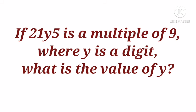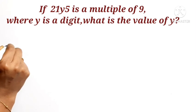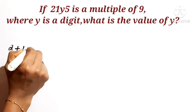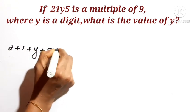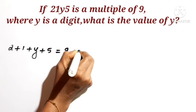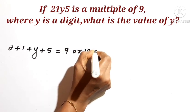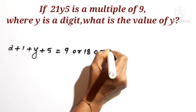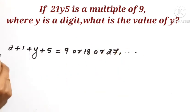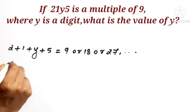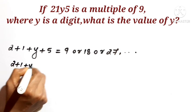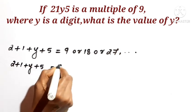If 21Y5 is a multiple of 9, where Y is a digit, what is the value of Y? Using the divisibility rule for 9: digit sum 2 plus 1 plus Y plus 5 must equal 9 or its multiples, such as 18, 27, etc.